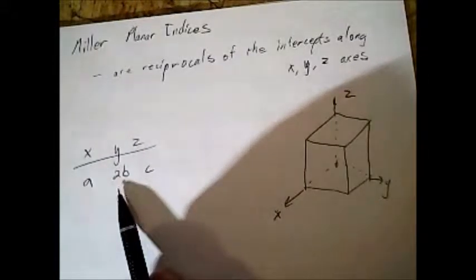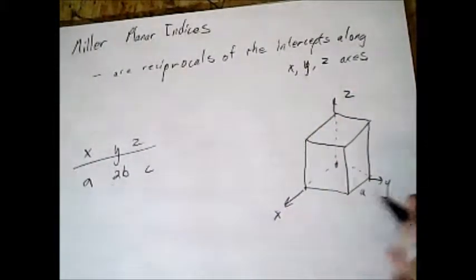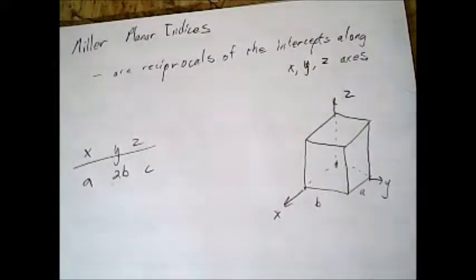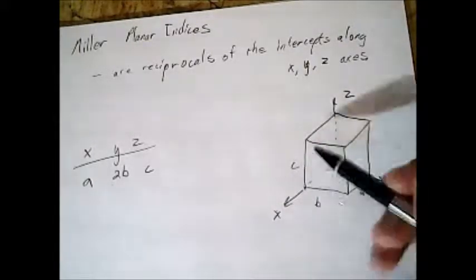And you're given a, b, and c. In this case, a is the x-direction, b is the y-direction, and c is the z-direction on this cube.